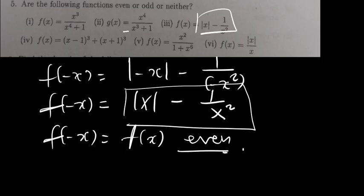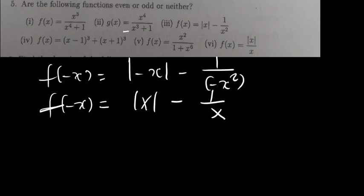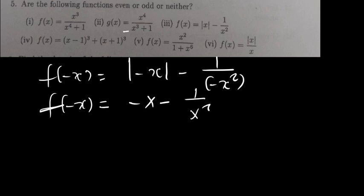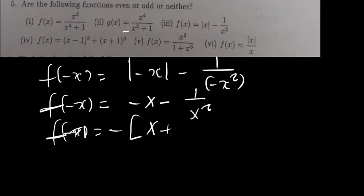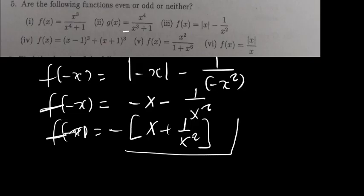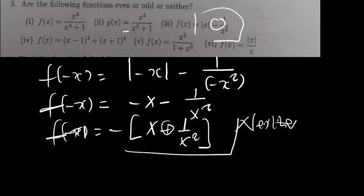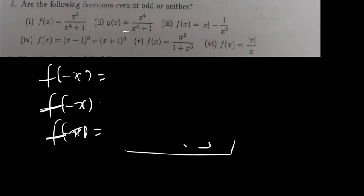If we didn't have the modulus, this function would not have been even. Without the modulus, there would be a negative in front. Factoring out negative would give x + 1 over something, but the bracket content would not match the original function because of a sign difference — it would have been neither. Because of the modulus, the function is considered even.